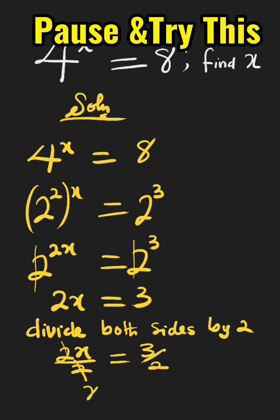2 will cancel 2, left with x equals to 3 all over 2 as improper fraction. We can change it to mixed number.